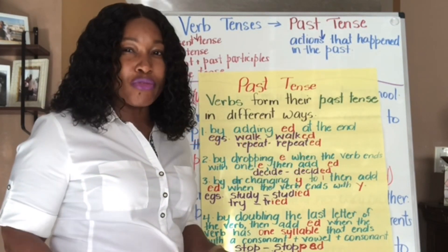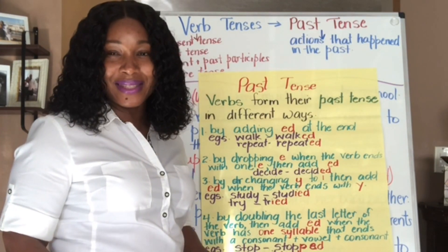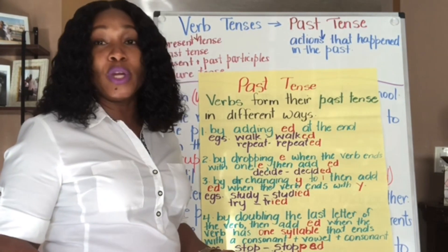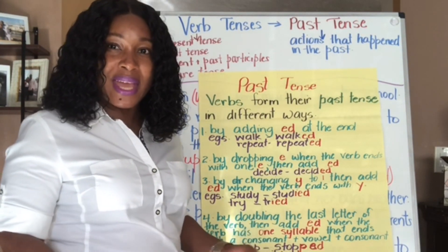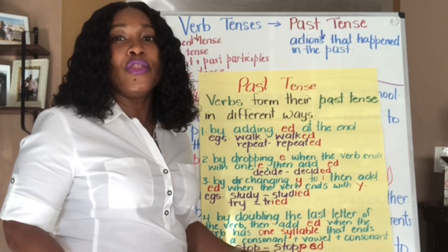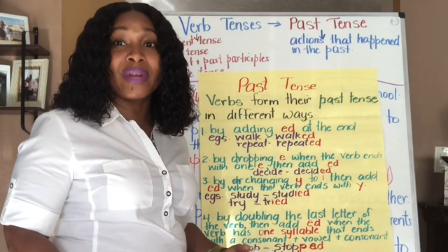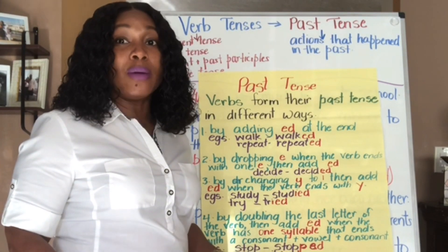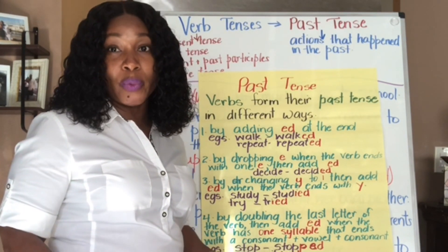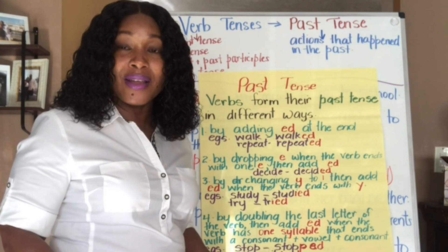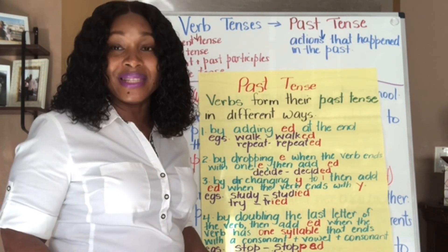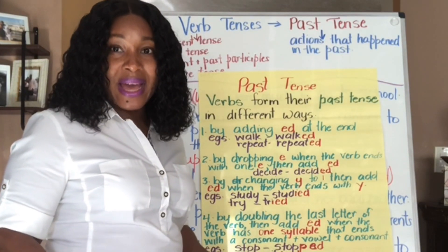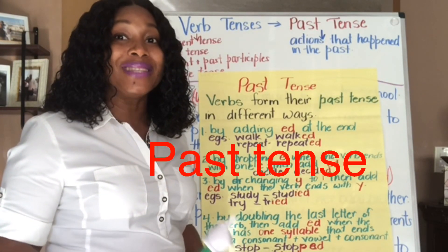We have already looked at the present tense. When we looked at subject-verb agreement with 'come' and 'comes' — the verb with the S, the verb without the S — those were all in the present tense. We also looked at present tense with auxiliary verbs; 'is' and 'are' are present tense. Today we're going to be looking at main verbs and the past tense form.